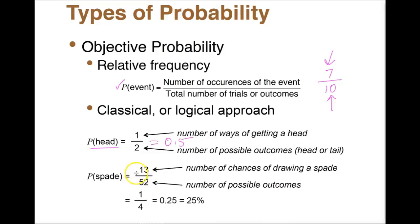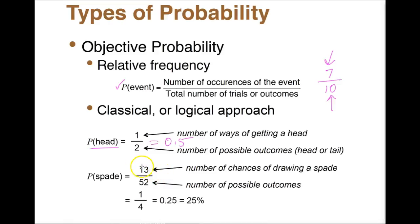For the probability of getting a spade: a deck of cards has 52 cards divided into four suits, and a spade is one of those suits. So 13 out of 52 gives us 13 spades out of the total 52 cards.